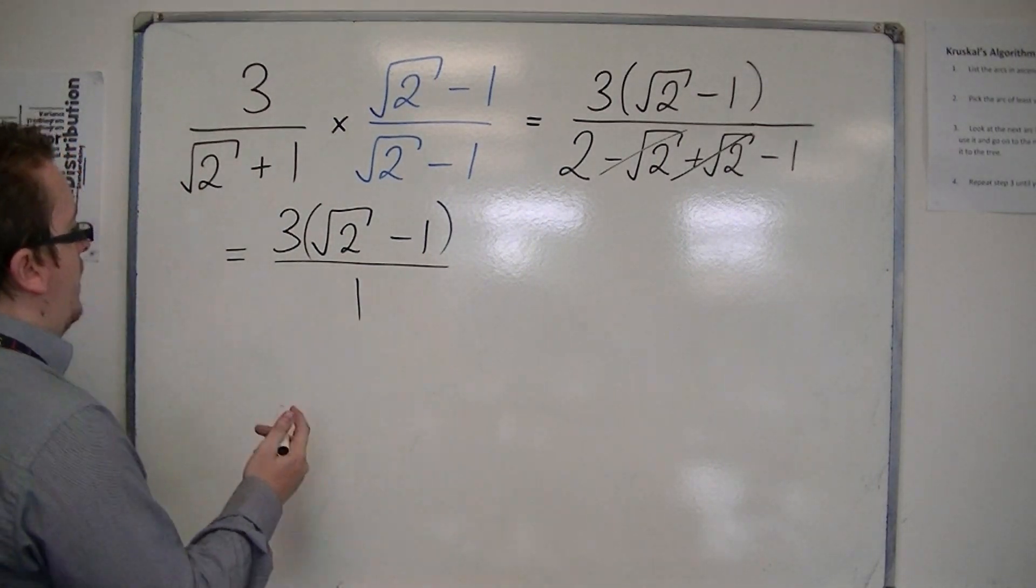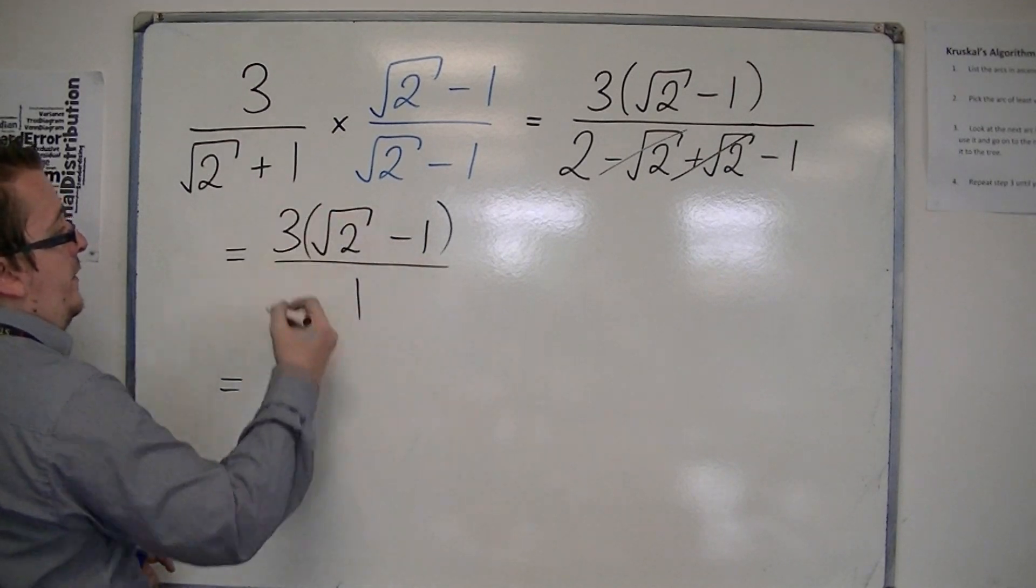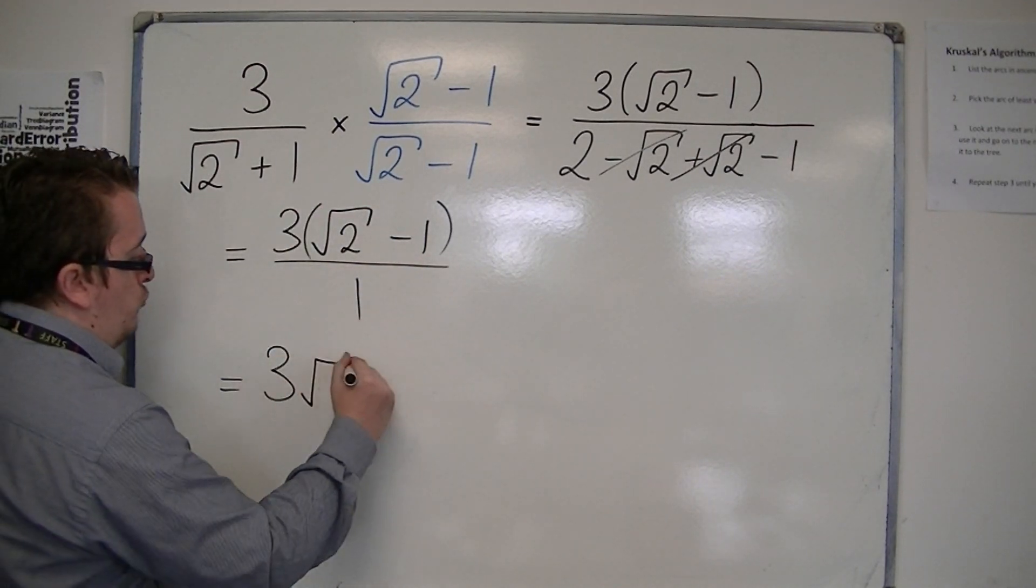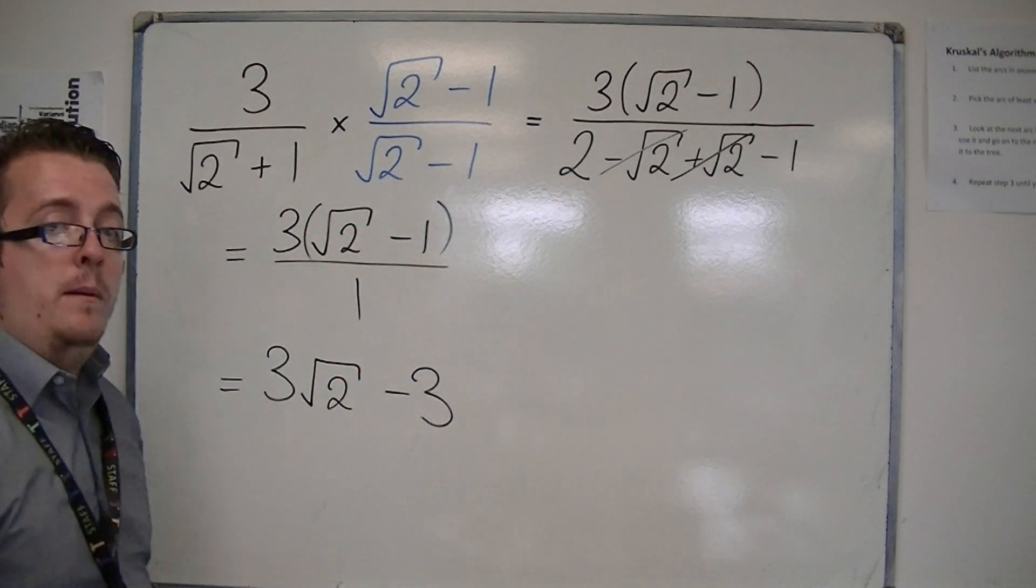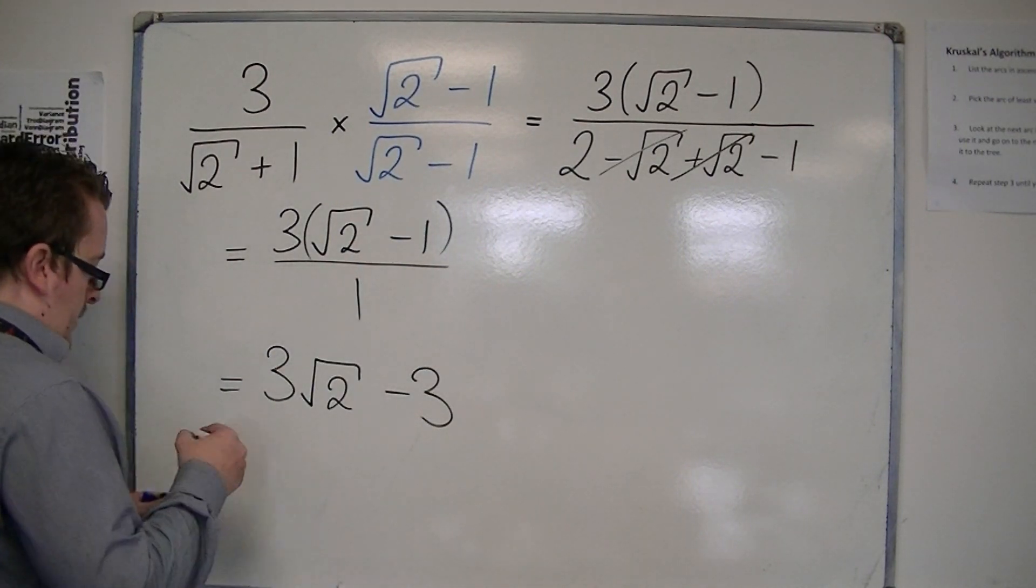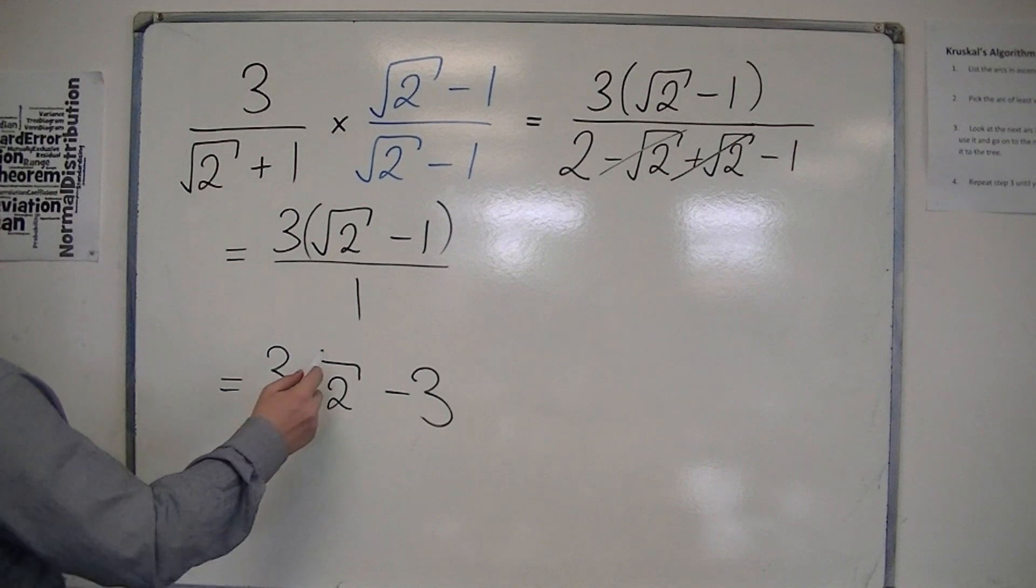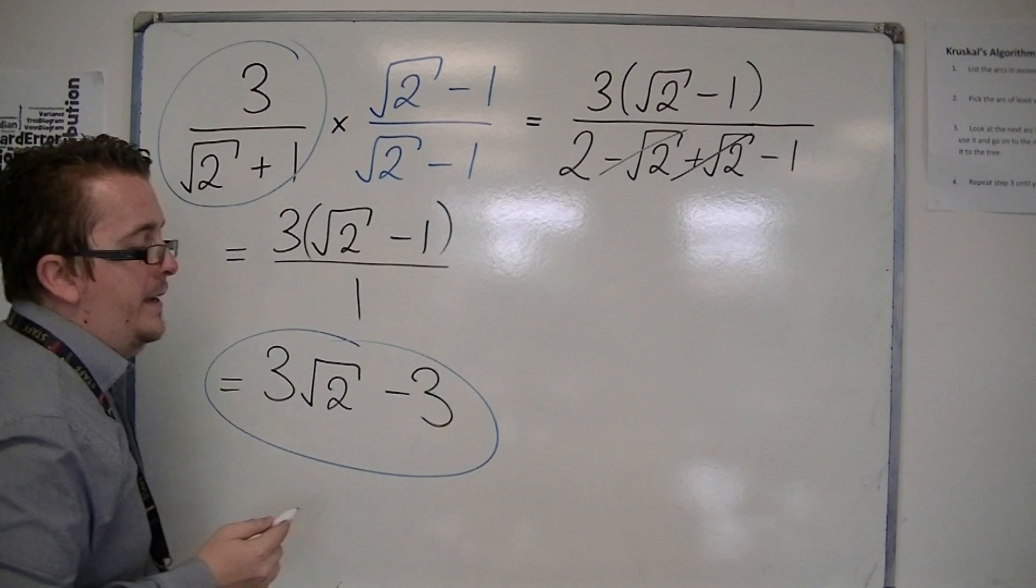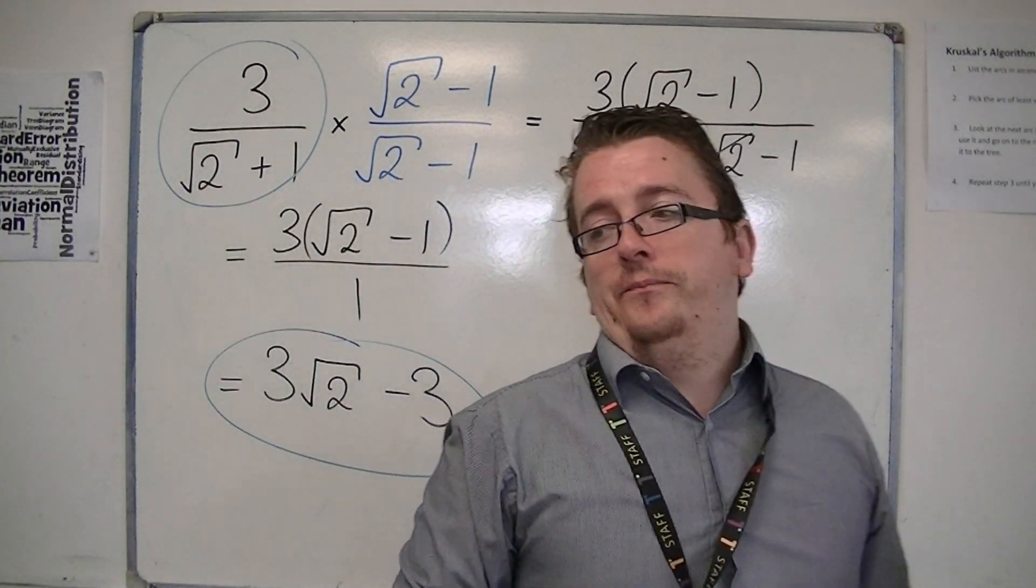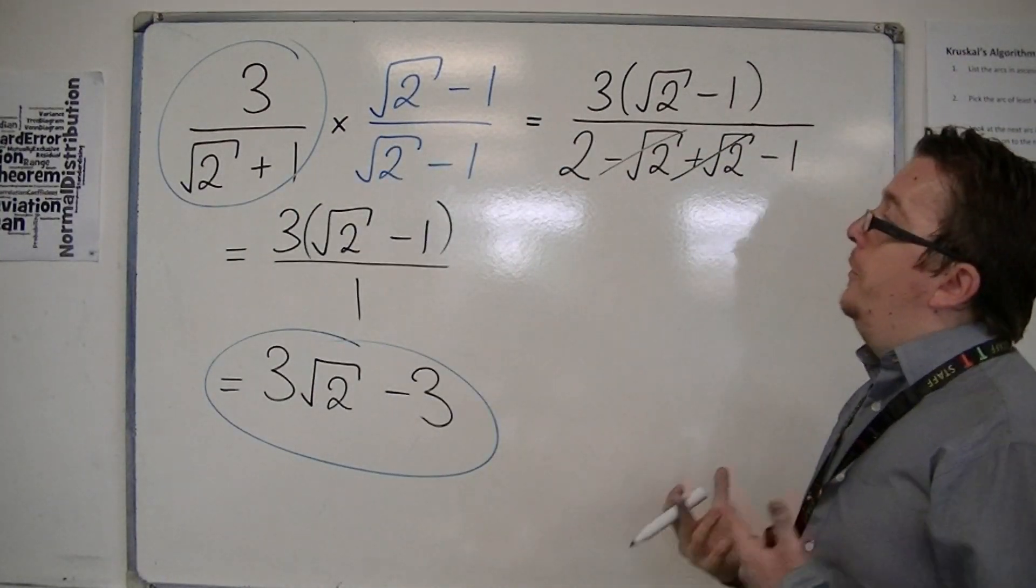So what I can now say is that actually this is just 3 root 2 minus 3, when I multiply out that bracket. And as you can see, this is going to be a lot easier for me to work with than this is. And that's the whole point, and that's what we want to do.